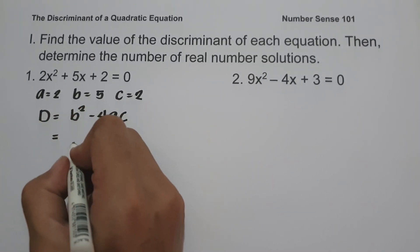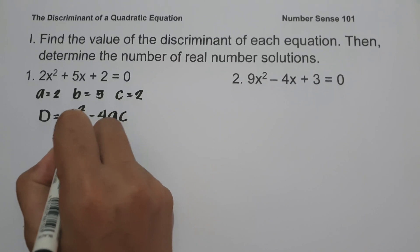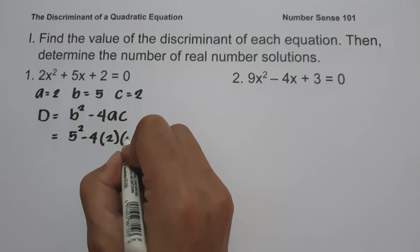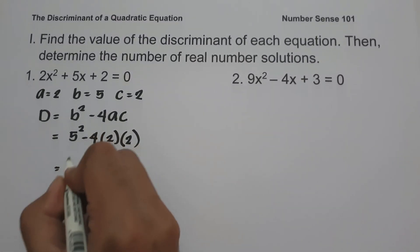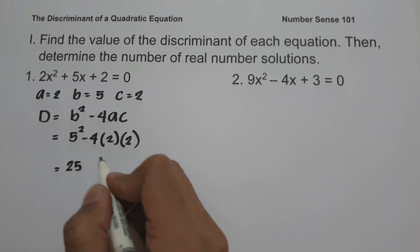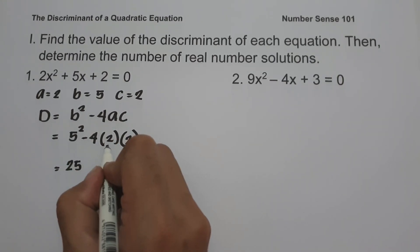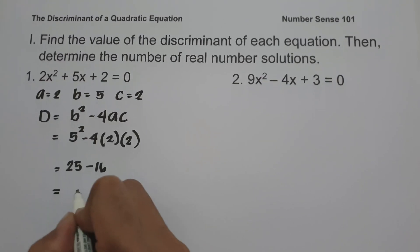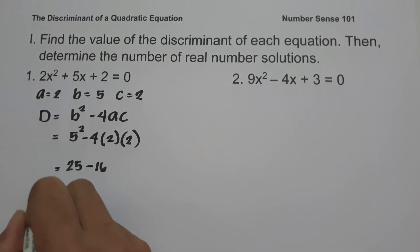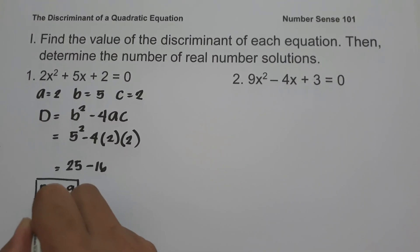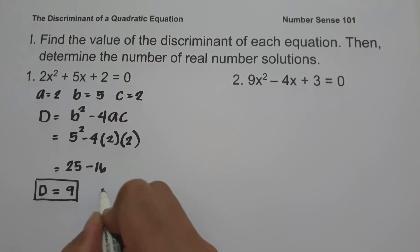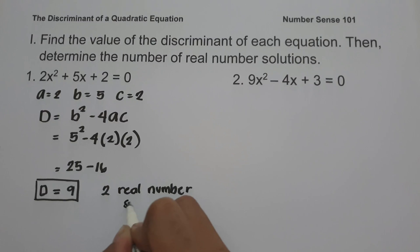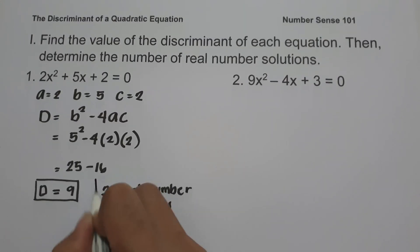Substituting the values of A, B, and C: B is 5, so we have 5 squared minus 4 times A, which is 2, times C, which is also 2. So 5 squared is 25, negative 4 times 2 is negative 8, and negative 8 times 2 is negative 16. Then 25 minus 16 equals 9. So the discriminant is equal to 9. Since D is greater than 0, that means we have two real number solutions.